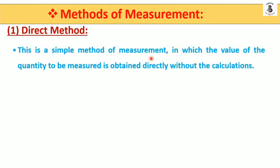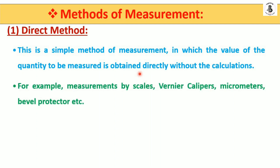Let us see the first one: the direct method of measurement. In the direct method, it is a simple method in which the value of the quantity to be measured is obtained directly without any kind of calculations. For example, you can take readings with the help of scales, vernier calipers, micrometers for measurement of linear distance, and bevel protractors for measurement of angles. These instruments directly indicate the measured value.